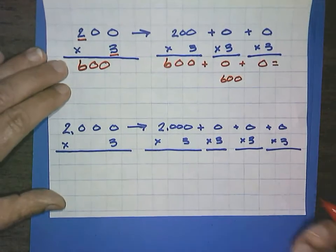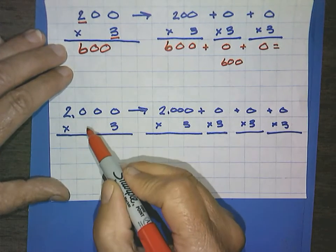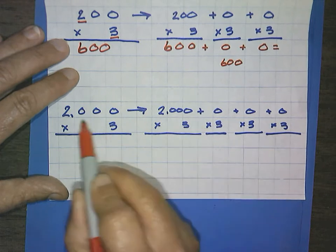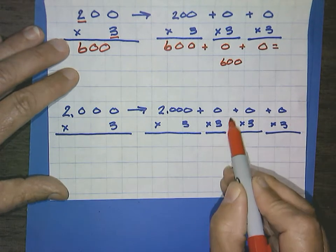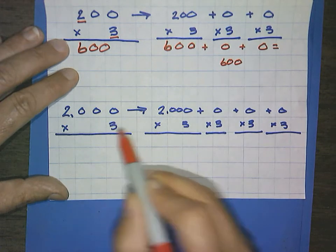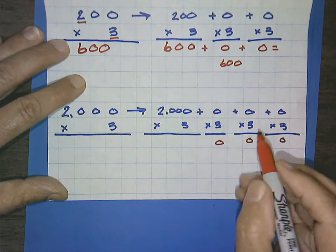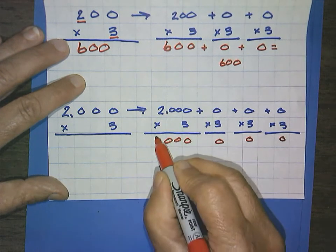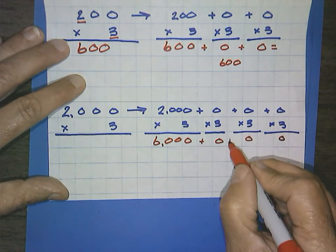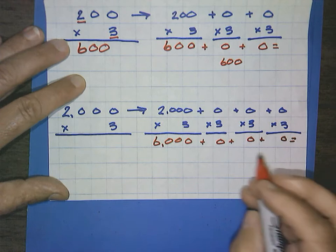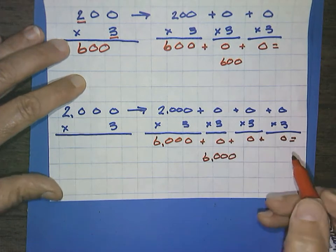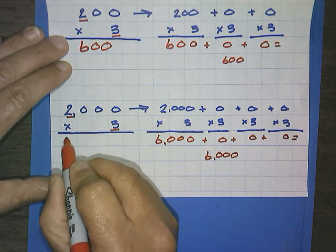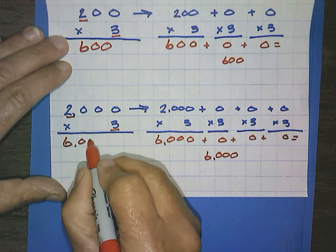And finally, even this would continue for all place values. Let's just do one more. 2,000 times 3 would simply be in expanded form, would be 2,000 times 3 plus 0 hundreds times 3 plus 0 tens times 3. And finally, 0 ones. Well, we know these are all going to be zeros. And then 3 times 0, 3 times 0, 3 times 0, and 3 times 2 would be 6,000 when you add all of these up. You get 6,000. And again, it's just showing that this method works. 2 times 3 is 6. Count your zeros. 1, 2, 3.